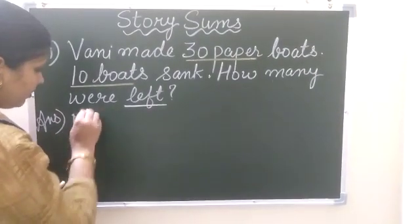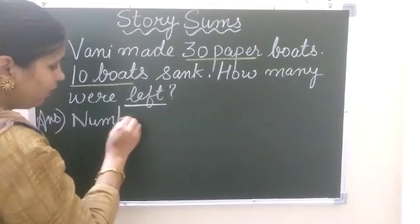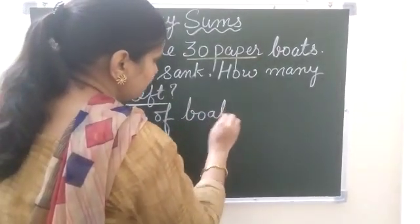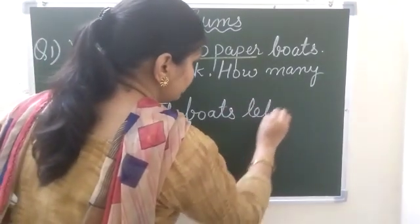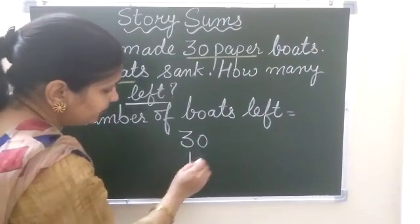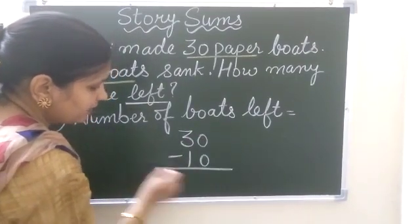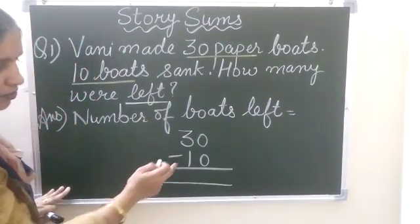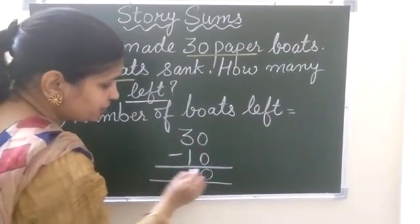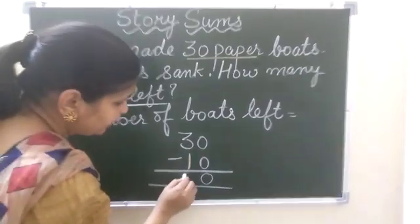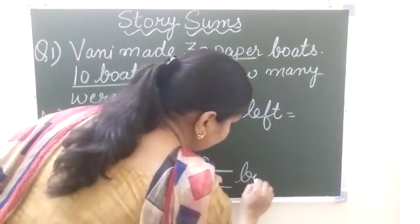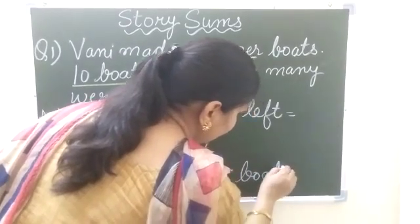So number of boats left is equal to: she made 30 boats, 10 boats sank — doob gahi. Toh jo doob gahi hai, unko subtract kar dhenge. So 0 minus 0 is 0, and 3 minus 1 is 2. So we are left with 20 boats.